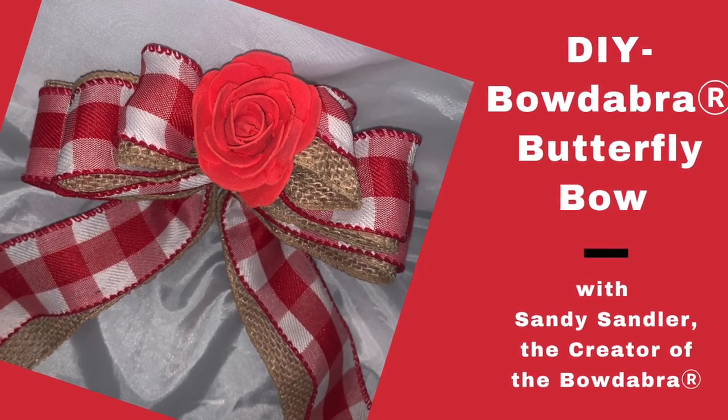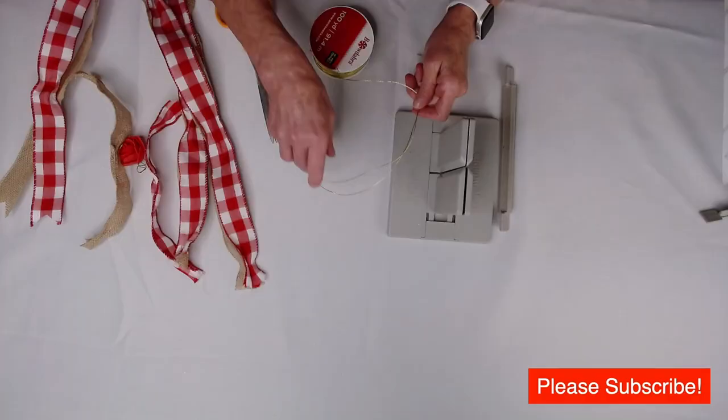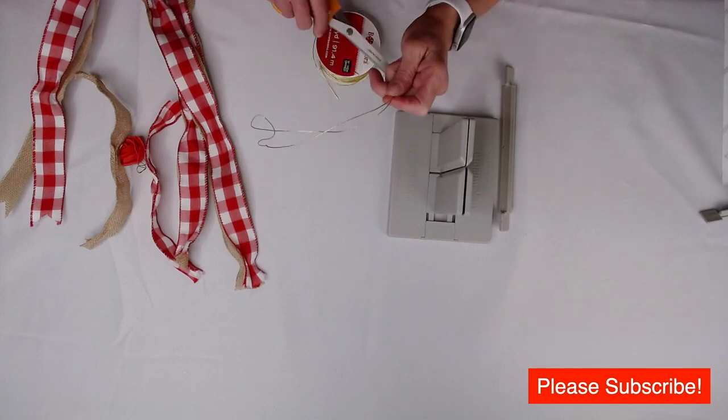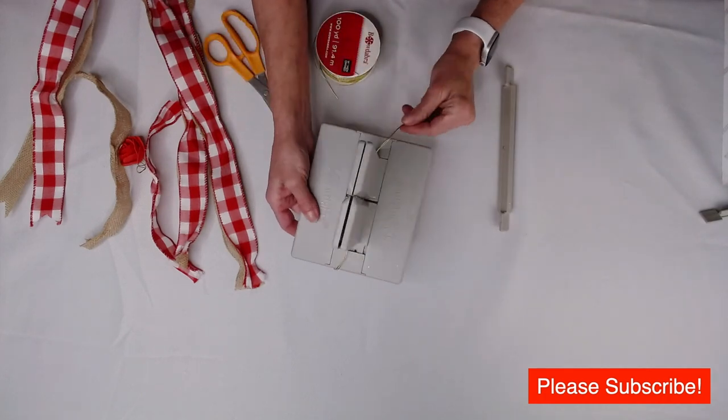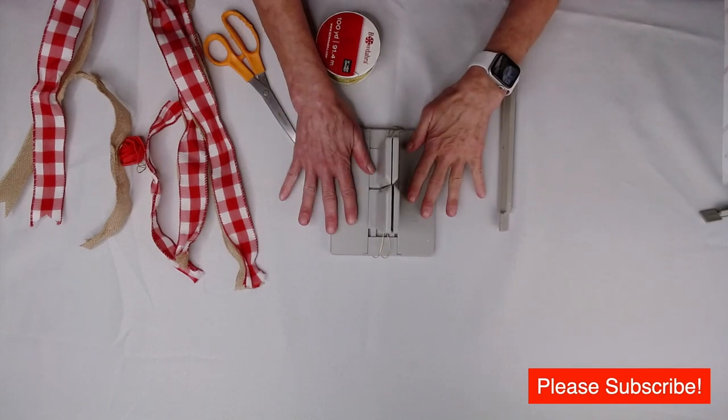First thing I'm going to do is take my Bowdabra Bow Wire. I'm going to make it as long as I want and fold it in half, and then I'm going to lay this down into the Bowdabra, tuck the ends underneath so they stay out of my way.